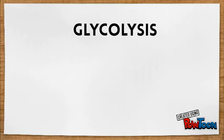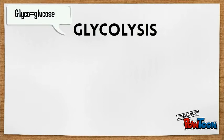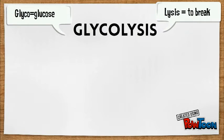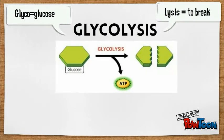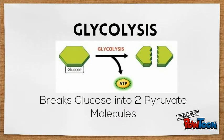If we break down the word glycolysis, we can figure out what it means. Glyco means glucose, and lysis means to split or to break. So when we put them together, it means to break apart glucose. And when we break glucose, we form two pyruvate molecules.